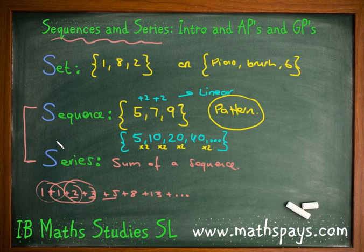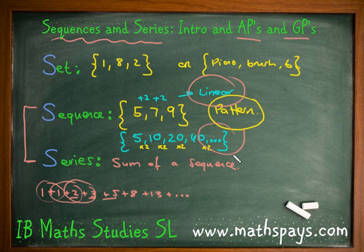So that's the basis of what we're looking at in this topic. We're looking at how to generate patterns, how to find the 100th or 200th term, and how to add the first 100 terms together. We've got APs and GPs because there are two different types of patterns — a linear and a non-linear pattern.